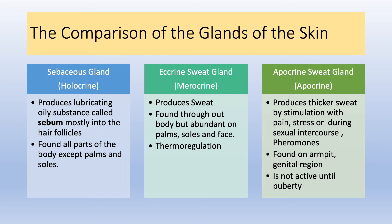Eccrine sweat gland does a merocrine type of secretion — that means they produce sweat and release it by exocytosis only. There is no cell body part released, only the product. They are found throughout the body but are abundant on the palms, soles, and face. They are responsible for thermal regulation and have a role in homeostasis of body heat.